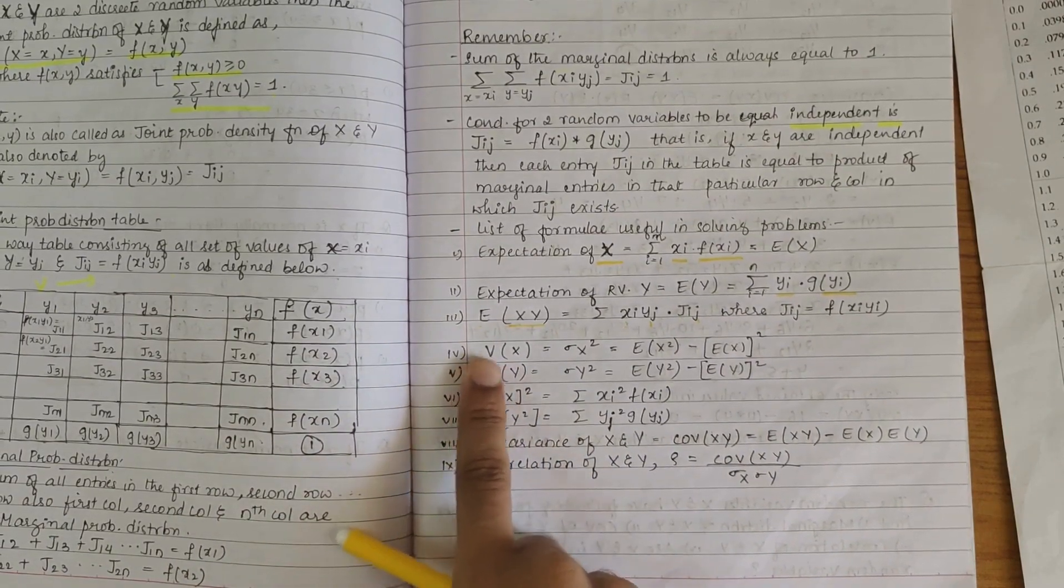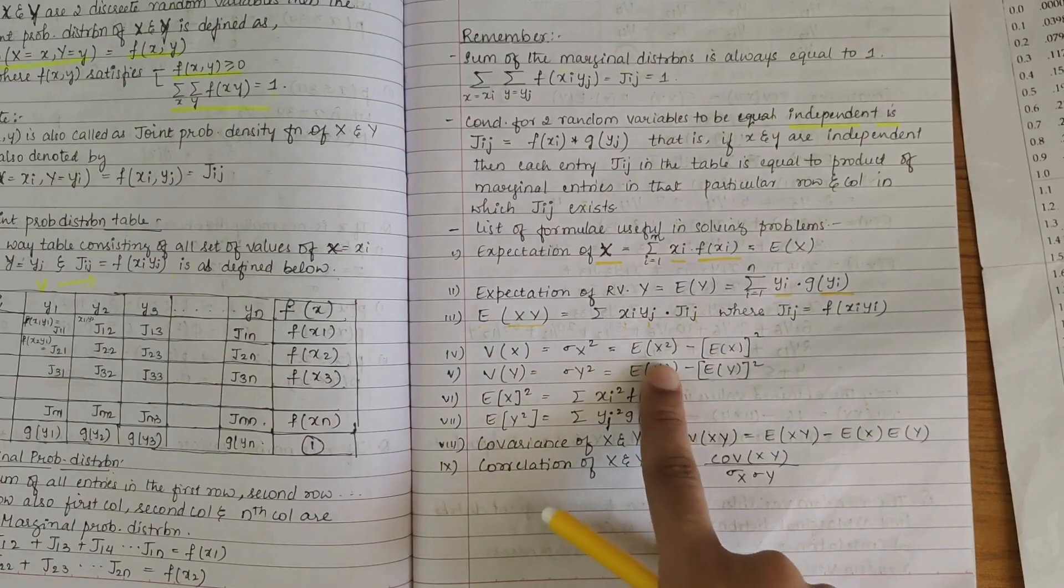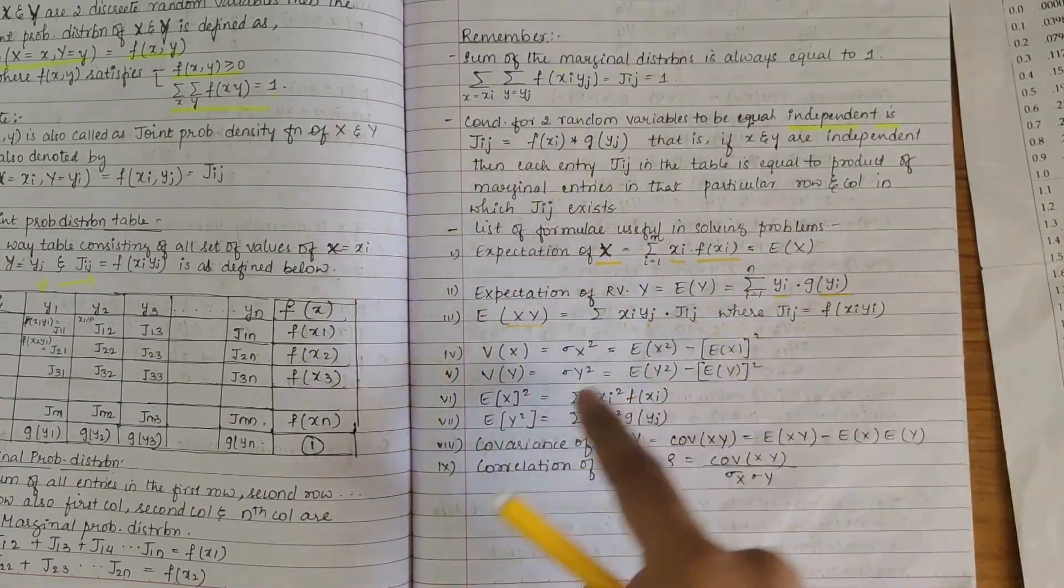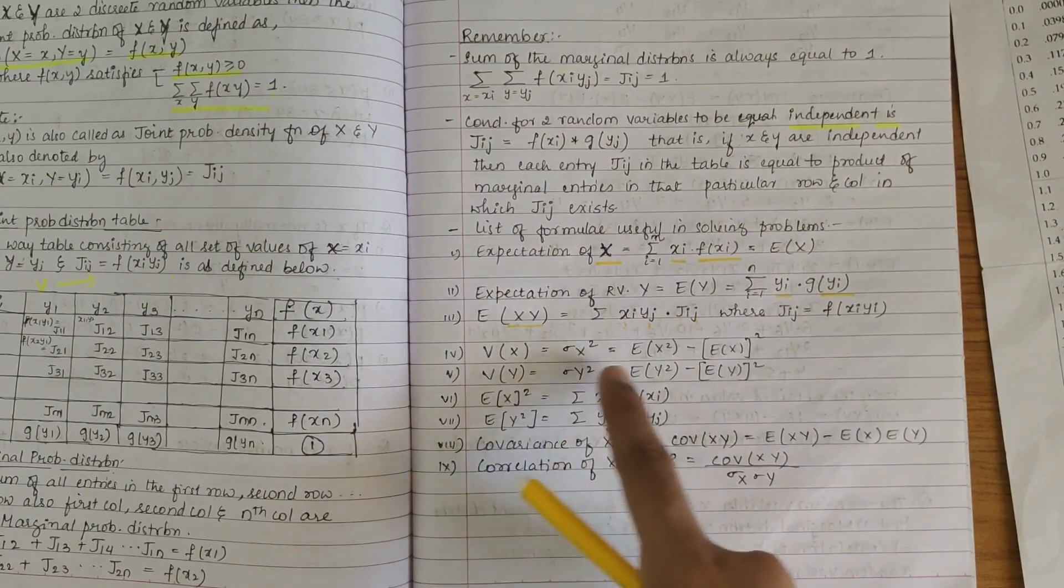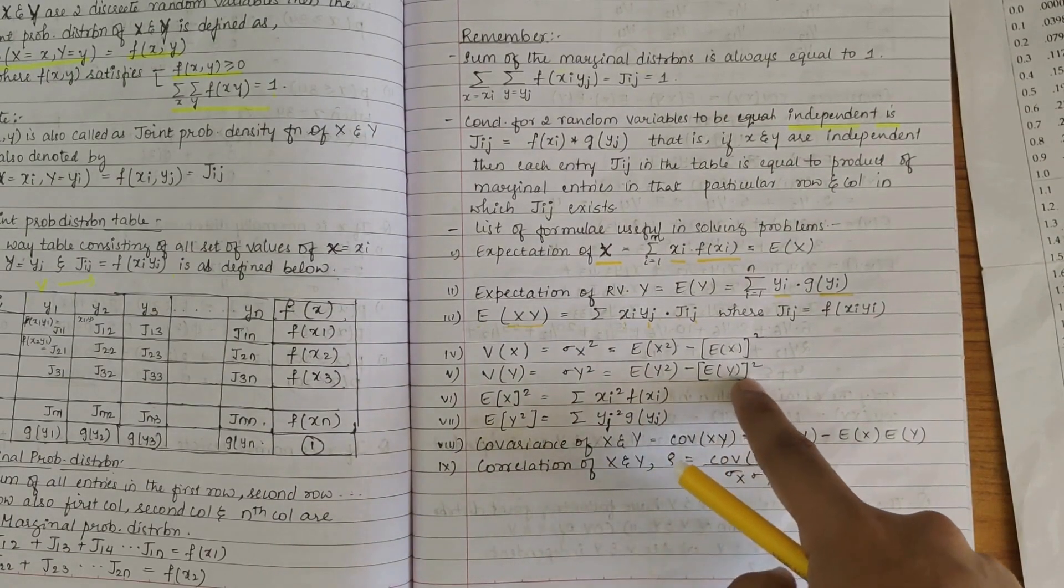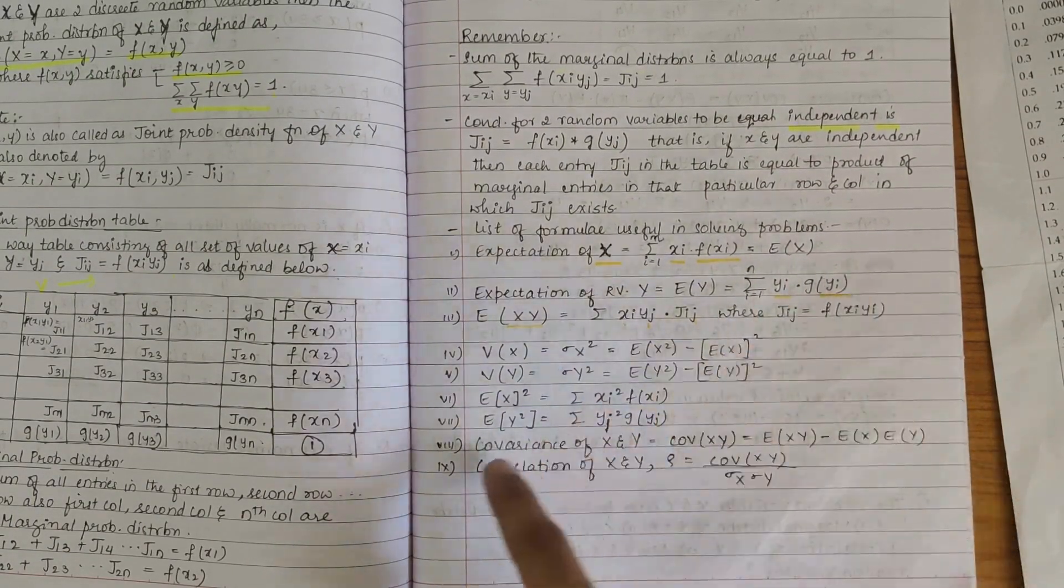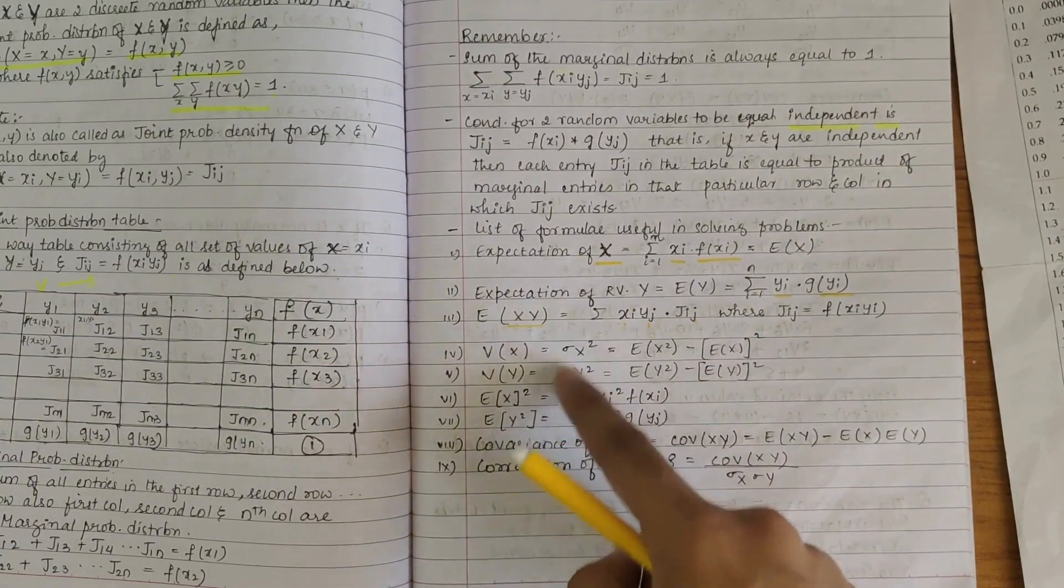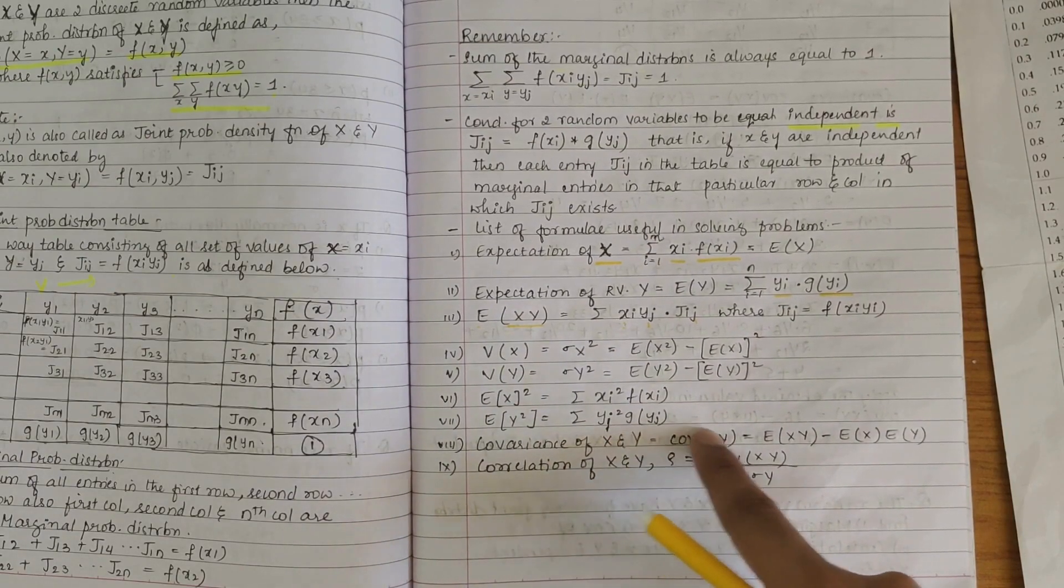Next we have variance. Variance of X is E(X²) minus E(X) whole square. And here, variance of Y is E(Y²) minus E(Y) whole square. E(X) whole square is Xi² f(Xi). E(Y) whole square is Yj into g(Yj).